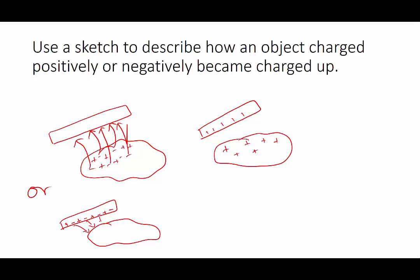And in that case, the rod will have less electrons than it had previously and the cloth more electrons. So the rod becomes positively charged and the cloth becomes negatively charged.